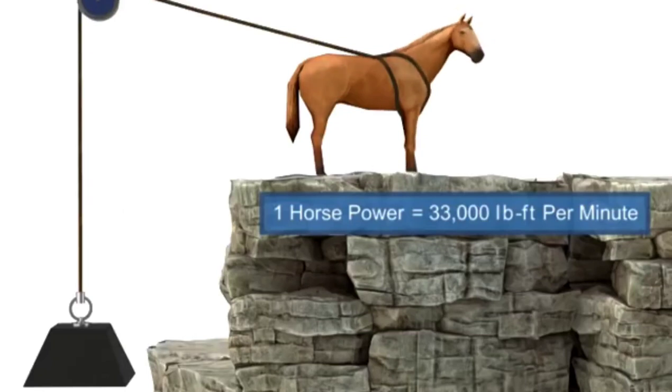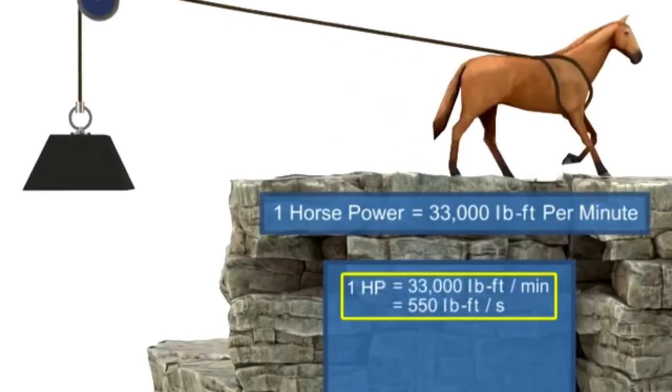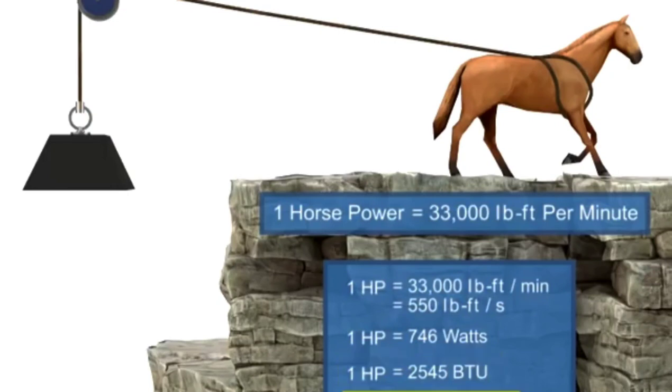In modern terms, horsepower is simply another unit of measurement for power, and can be translated into watts, BTUs, joules, or any unit of power. Units that measure motor power are typically in horsepower or watts.